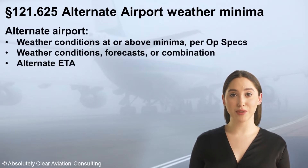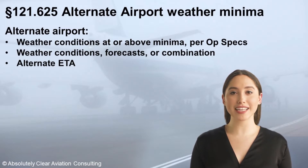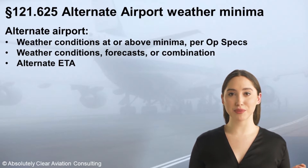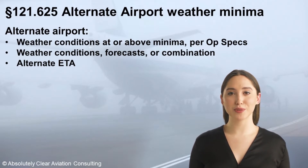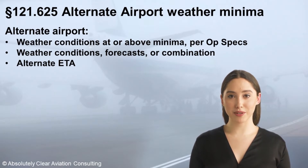When an alternate airport is required, the airport selected must meet certain minimum weather conditions at the time of arrival at that airport. The alternate ETA for this purpose is based on the planned destination ETA plus the time en route to the alternate. Both weather reports and forecasts must be considered, including conditional statements in the forecast such as tempo, probability, and becoming statements.